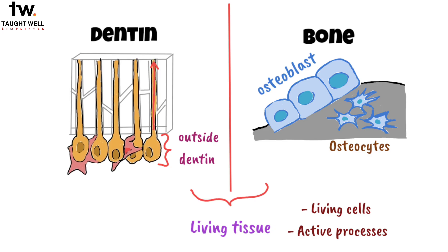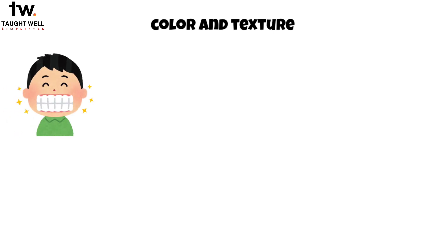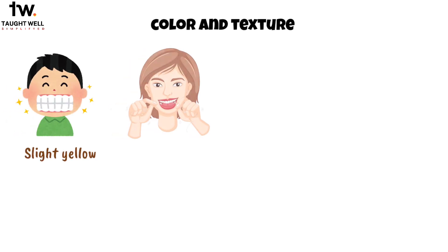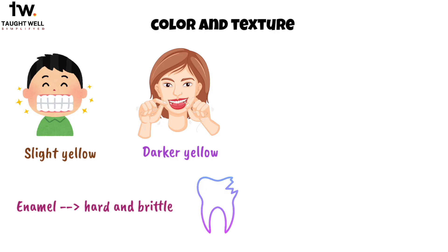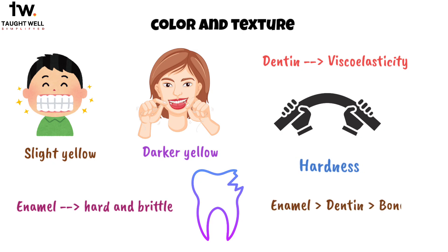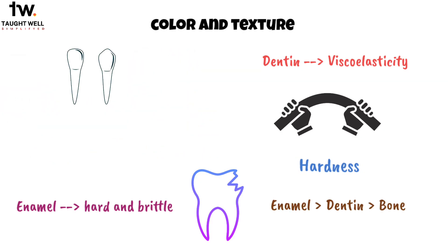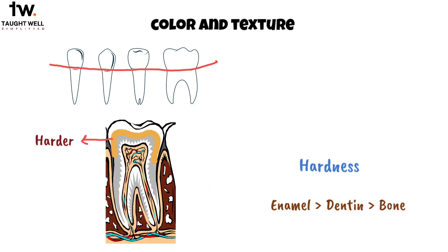Let's dive deeper into the properties and composition of dentin. In young people, dentin usually looks light yellow, but as we get older, this dentin tends to get darker. Enamel is really hard and brittle, which means it can break easily. But dentin has a property called viscoelasticity — it can change shape a little bit, which gives the tooth some flexibility. Dentin is harder than bone but not as hard as enamel, and its hardness can change between different types of teeth and between the crown and root dentin. Usually, the dentin in the middle of the tooth is harder than the dentin near the pulp or the outer edges.